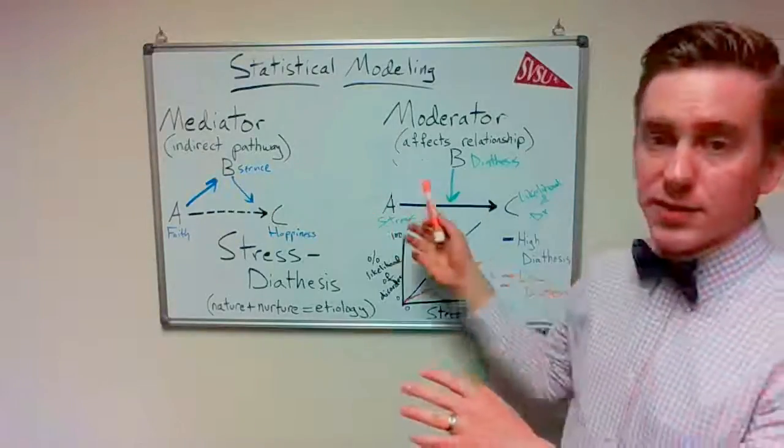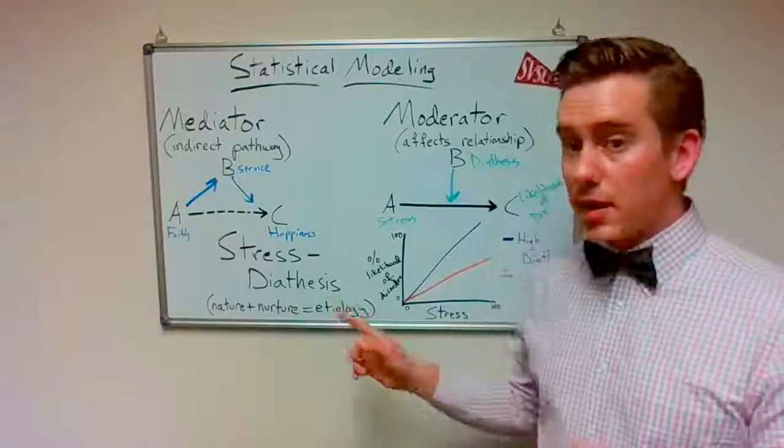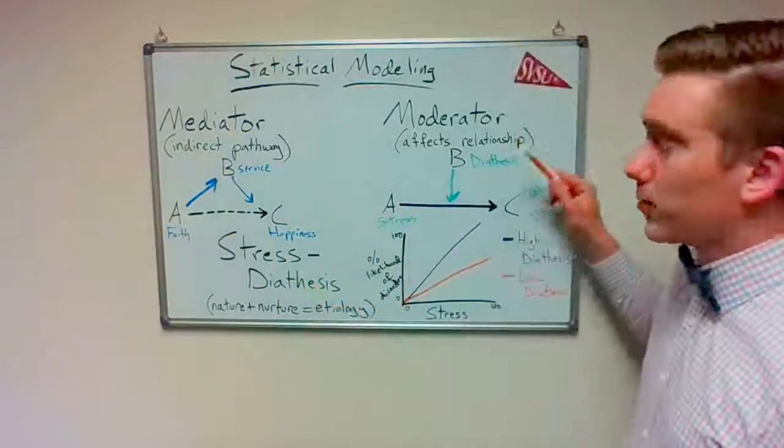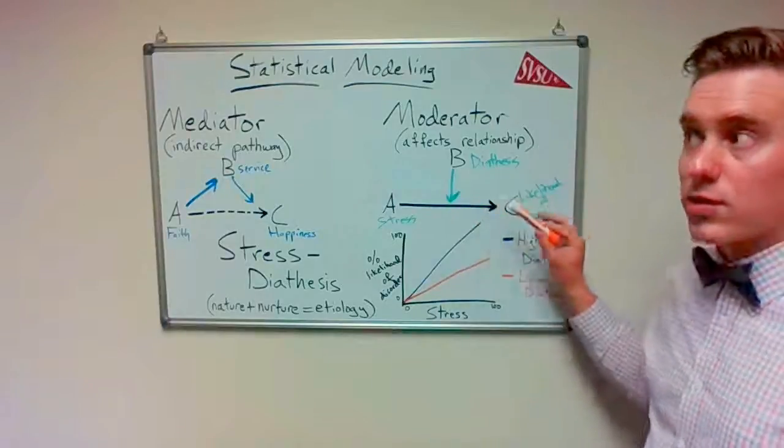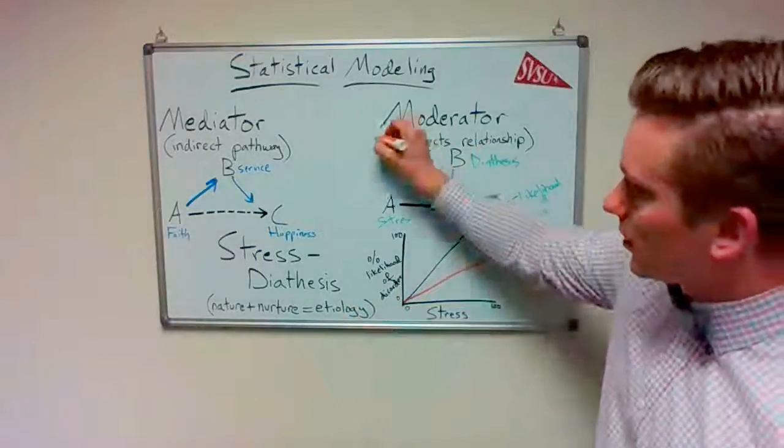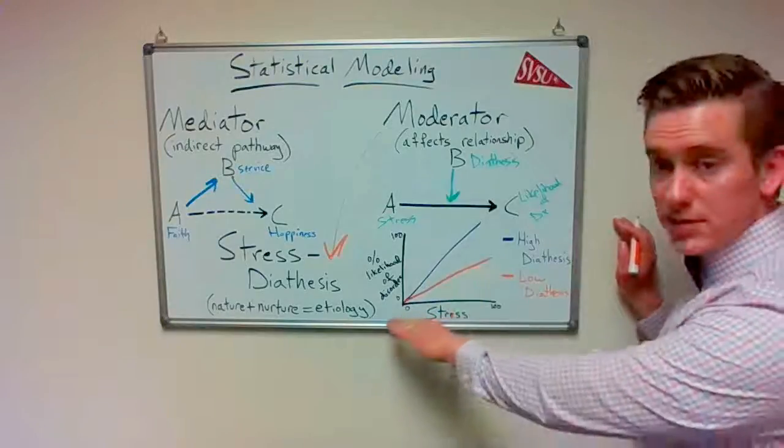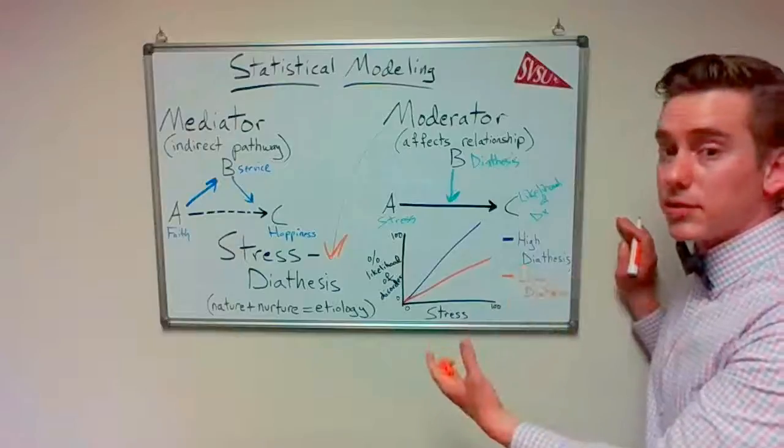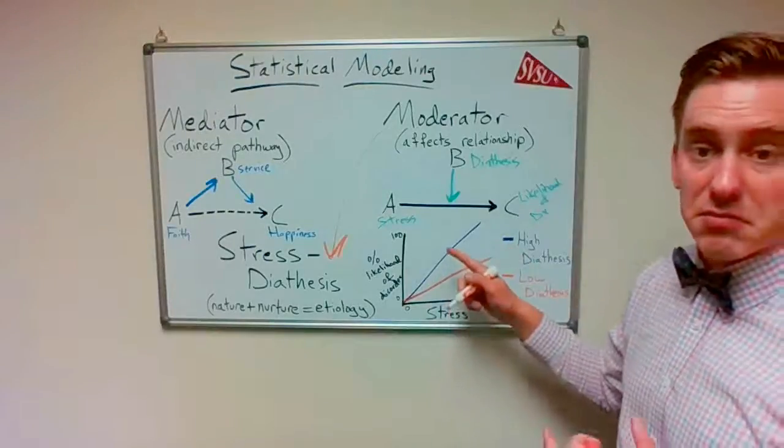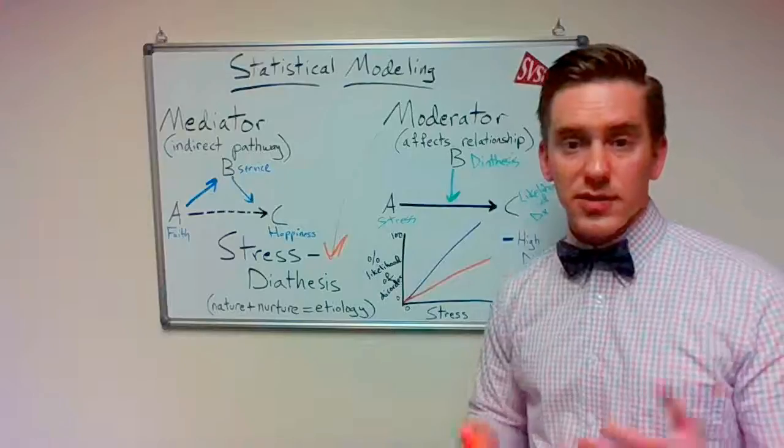To recap here, we've got three different statistical models that help us discuss abnormal psychology and help us specifically understand the mechanisms of these links between things, and they're really helpful for discussing etiology in particular. We've got the mediator, which is an indirect pathway between two variables. We've got the moderator that affects the relationship, or in other words, it changes the strength or direction of a correlation between two variables. And then a specific type of moderator is the stress diathesis model, which is a big piece of how we talk about etiology. And that says, yes, stress is relevant because the more stress someone has, the more likely they are to become disordered. But what's also relevant is their diathesis or their genetic inheritance, and that diathesis moderates the relationship between stress and disordered outcomes. So those are three statistical models to know about. Thanks for watching. Have a great day.